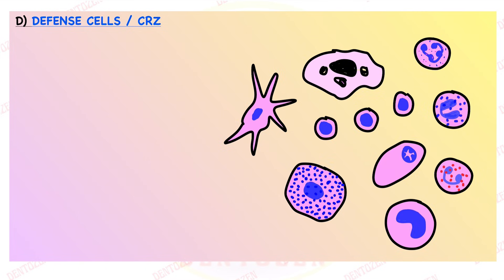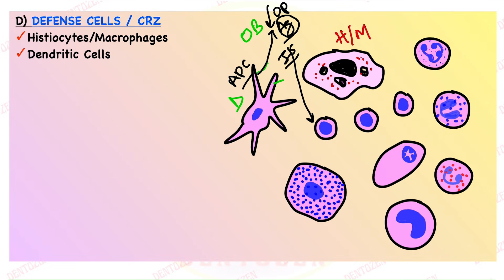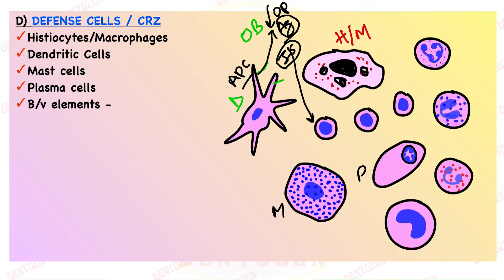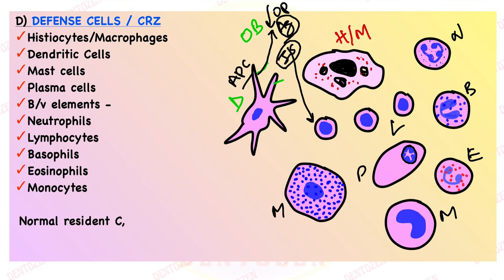Defense cells are also seen in the cell-rich zone. These include histiocytes or macrophages (which can have many granules from engulfed material), dendritic cells (which have dendrites, act as antigen-presenting cells, go near odontoblasts to identify antigens and present them to lymphocytes — they have a role in immunosurveillance), mast cells (with many granules), plasma cells (with eccentric cartwheel-shaped nucleus), and blood vessel elements including neutrophils, lymphocytes, basophils, eosinophils and monocytes. All these cells are normal residents of the pulp and become active during inflammation in caries, irritation or trauma.